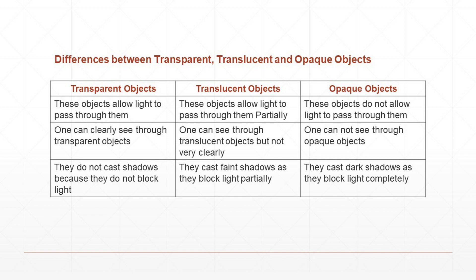Through transparent objects, we can clearly see other objects. Through translucent objects, we can see objects but not very clearly — only as blurred or faint images. Through opaque objects, one cannot see at all.